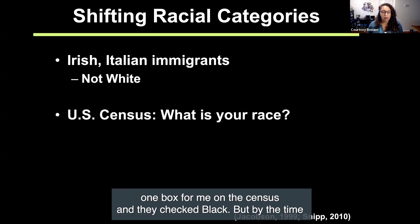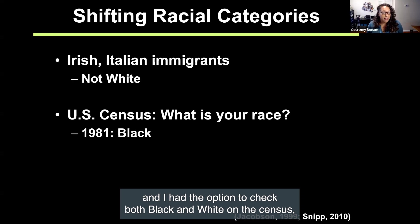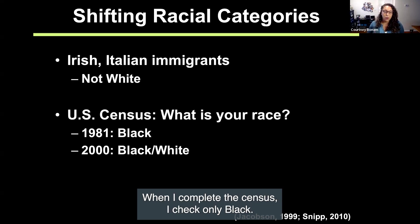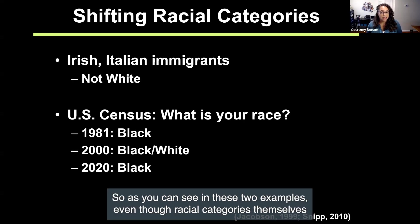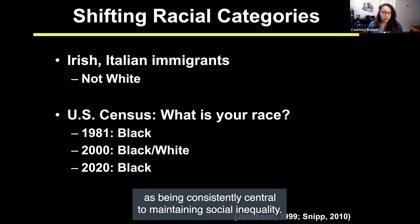When I was born, my parents could only check one box for me on the census and they checked Black, but by the time I graduated from high school, the multiracial movement had taken off, and I had the option to check both Black and white, which I did. Now, how I identify has shifted again, and when I complete the census, I check only Black. Even though racial categories themselves have shifted over time, race stands out among other social categorization systems as being consistently central to maintaining social inequality.